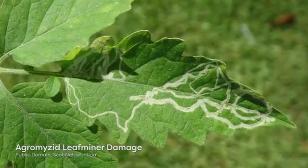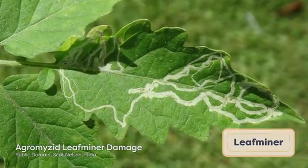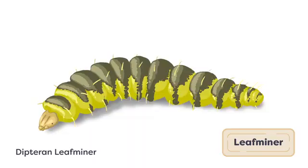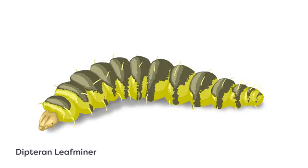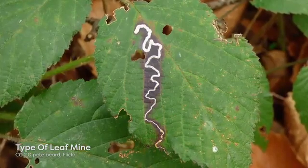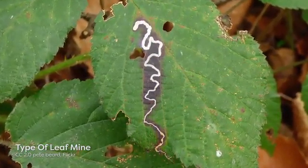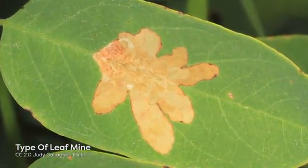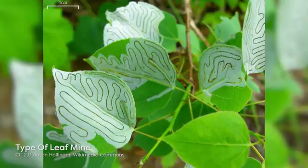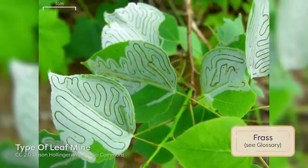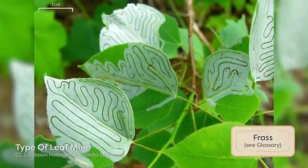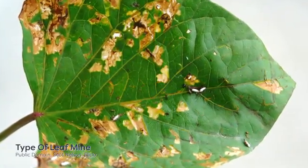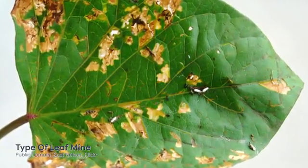Insects and mites that feed within leaves are called leaf miners. The bodies of leaf mining insects are usually dorso-ventrally flattened to support this lifestyle. Leaf miners typically have chewing mouth parts that project forward, and as the insect feeds within the leaf, it leaves a tunnel-like trail where only a thin layer of leaf epidermis remains. This is known as a leaf mine. The pattern of leaf mines within a leaf, as well as the frass or waste accumulated within the mines, can be characteristic of the species that made them and help entomologists identify the insect.